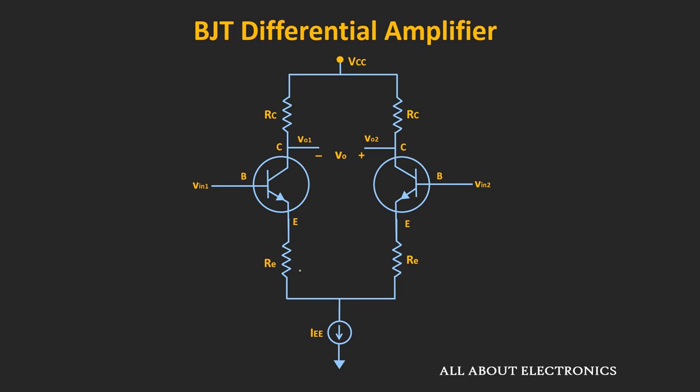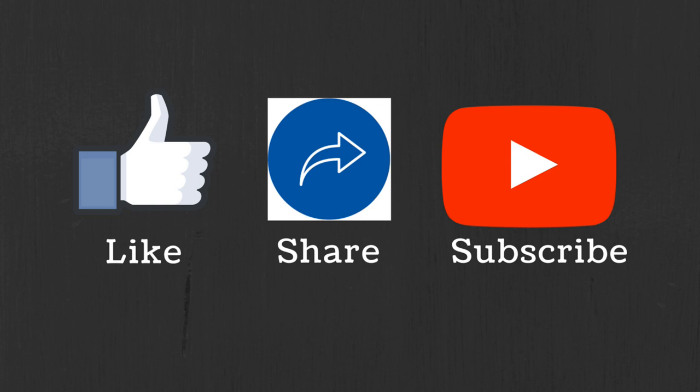This linear range can be extended by adding emitter resistors of equal value to both transistors, but the disadvantage is that the differential gain will reduce. In the next video, using small signal analysis, we will find the differential and common mode gain, and see the effect of the emitter resistor on the gain. If you have any question or suggestion, let me know in the comment section below, and if you liked this video, hit the like button and subscribe for more such videos.